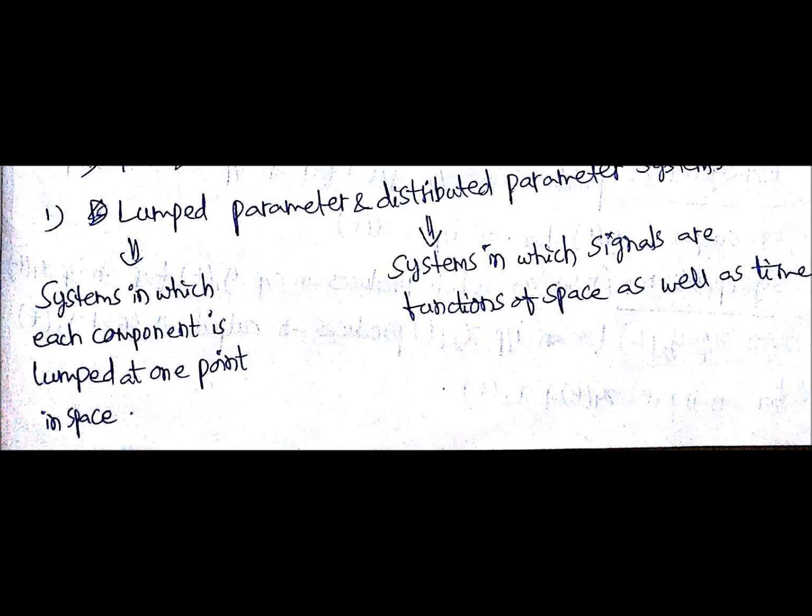But why? Like how? What is meant by exactly lumped parameter? Lumped parameter means the systems in which each component is lumped at one point in space.